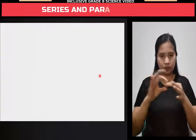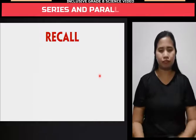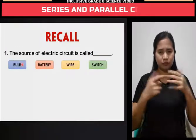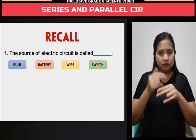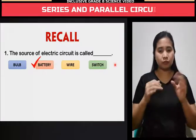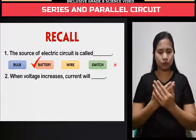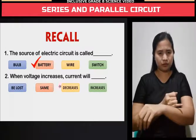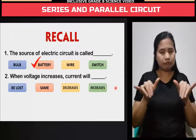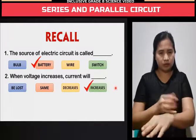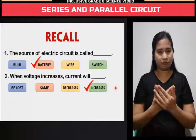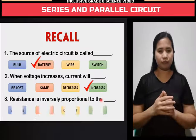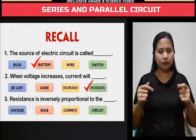Let us recall our previous topic. Are you ready? Number 1: The source of an electric circuit is called — Bulb, Battery, Wire, or Switch? The answer is Battery. Number 2: When voltage increases, the current will also increase — it is directly proportional. Number 3: Resistance is inversely proportional to the current.